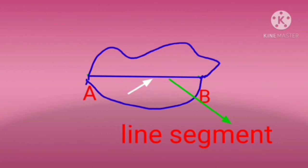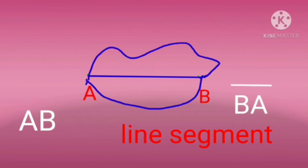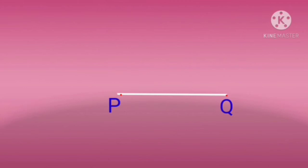So the middle line, which is the straight line, represents the least distance between point A and point B, connecting them. It is represented as AB bar or BA bar. A line segment is a part of a line and it has two end points.